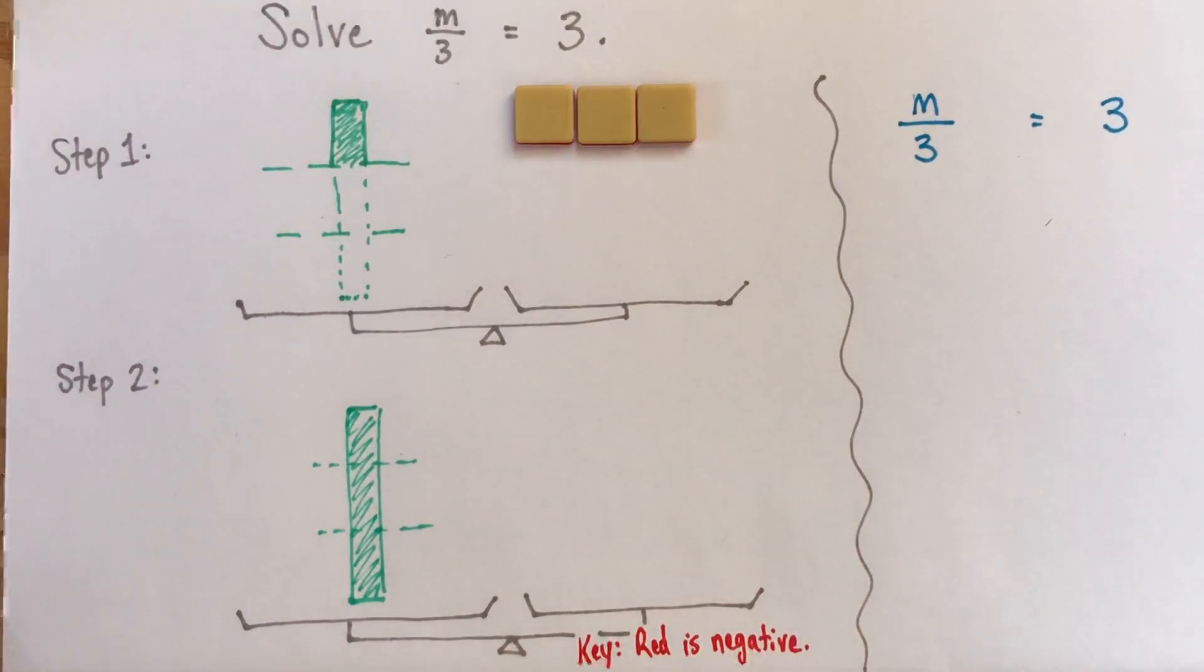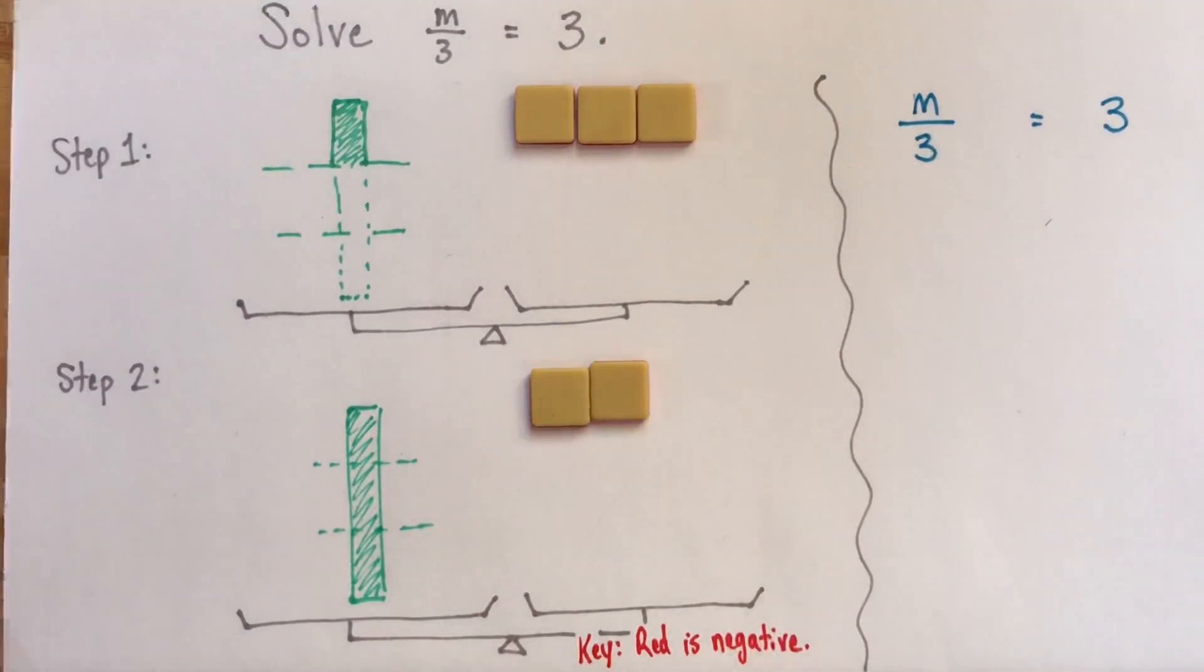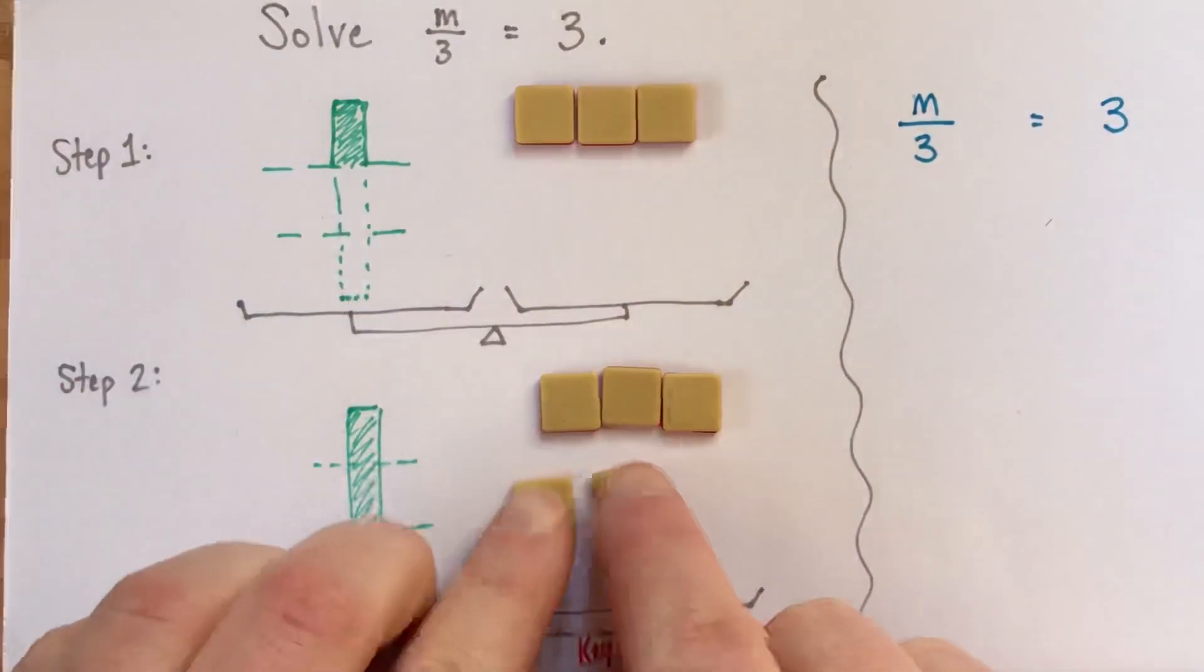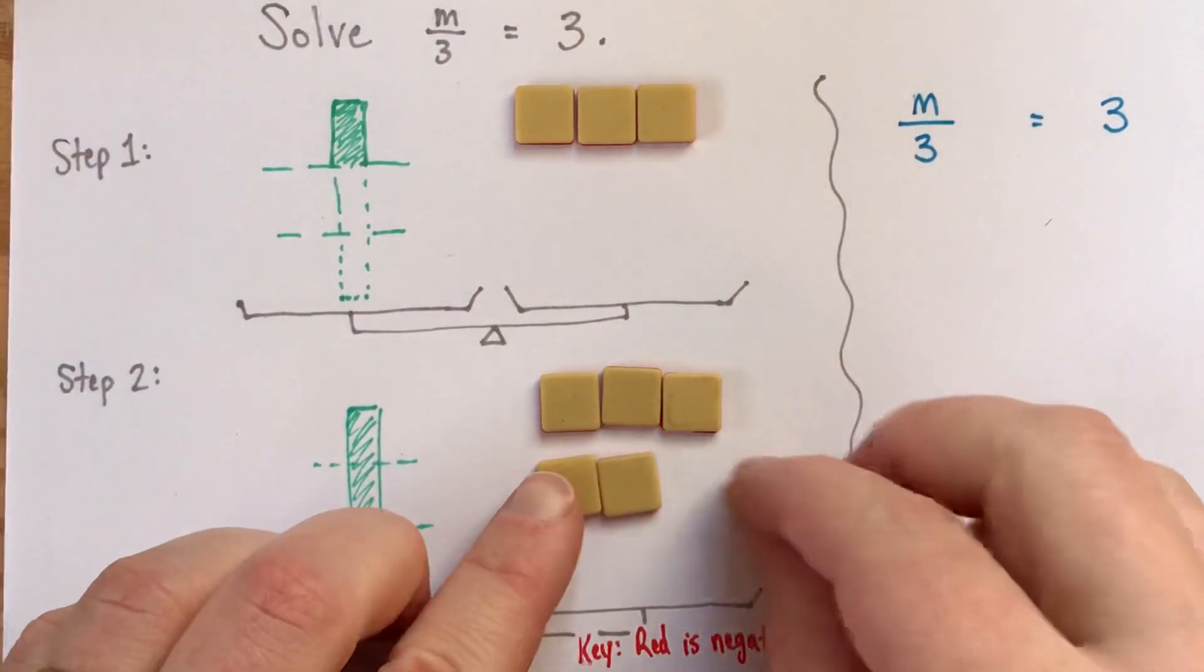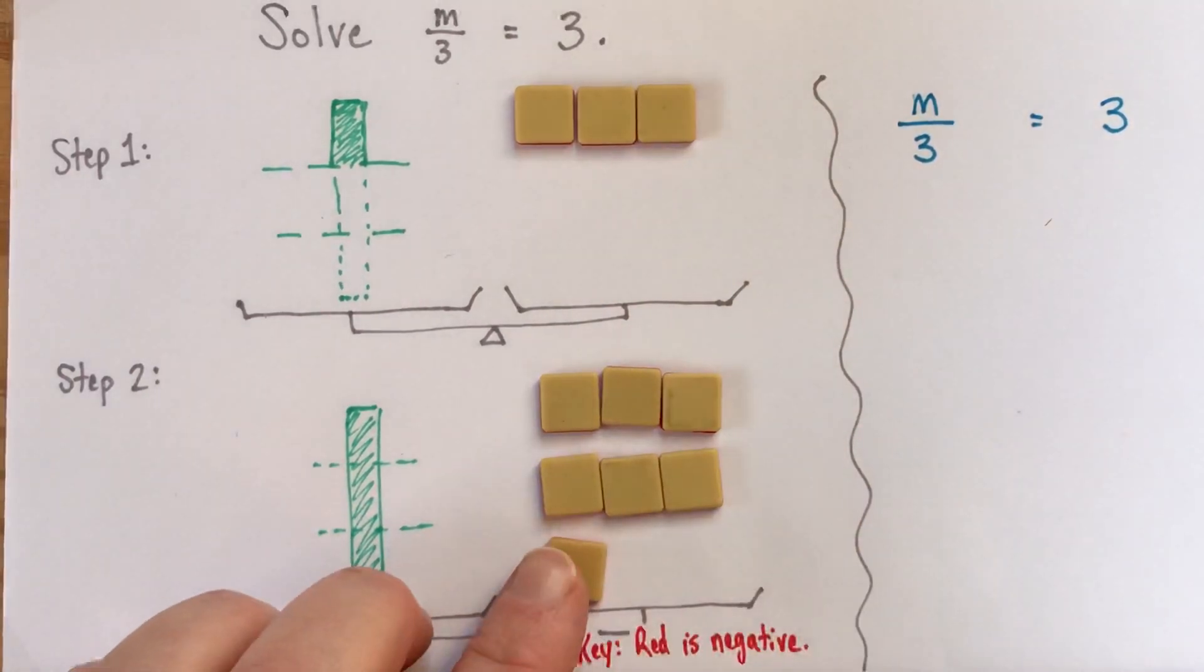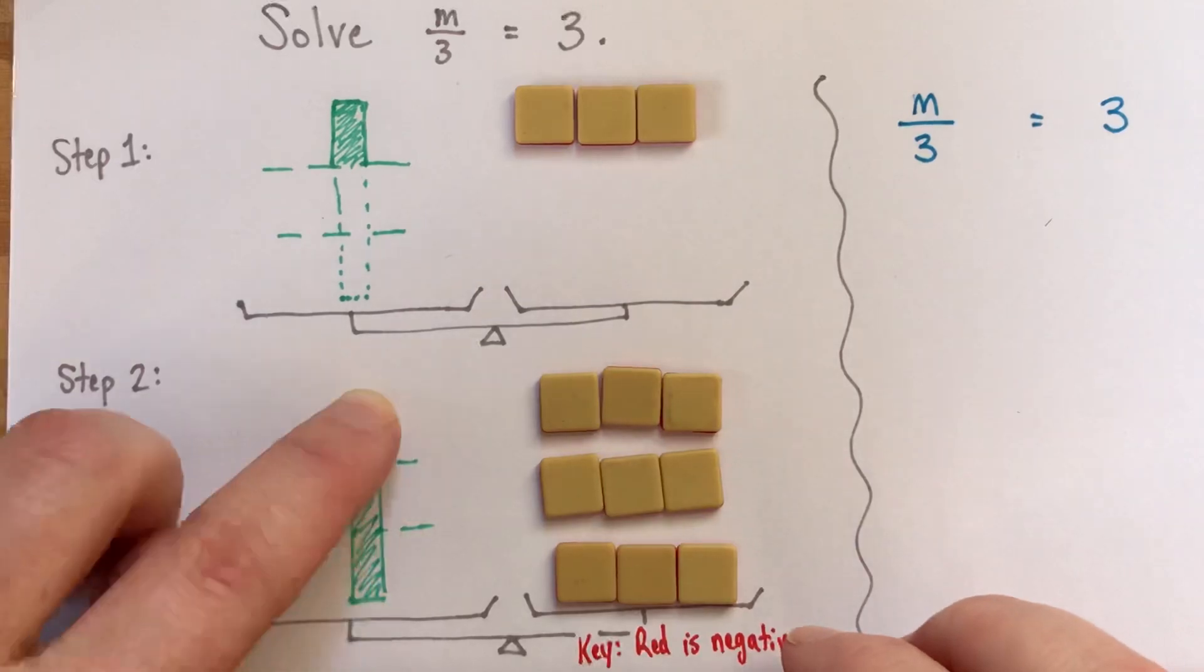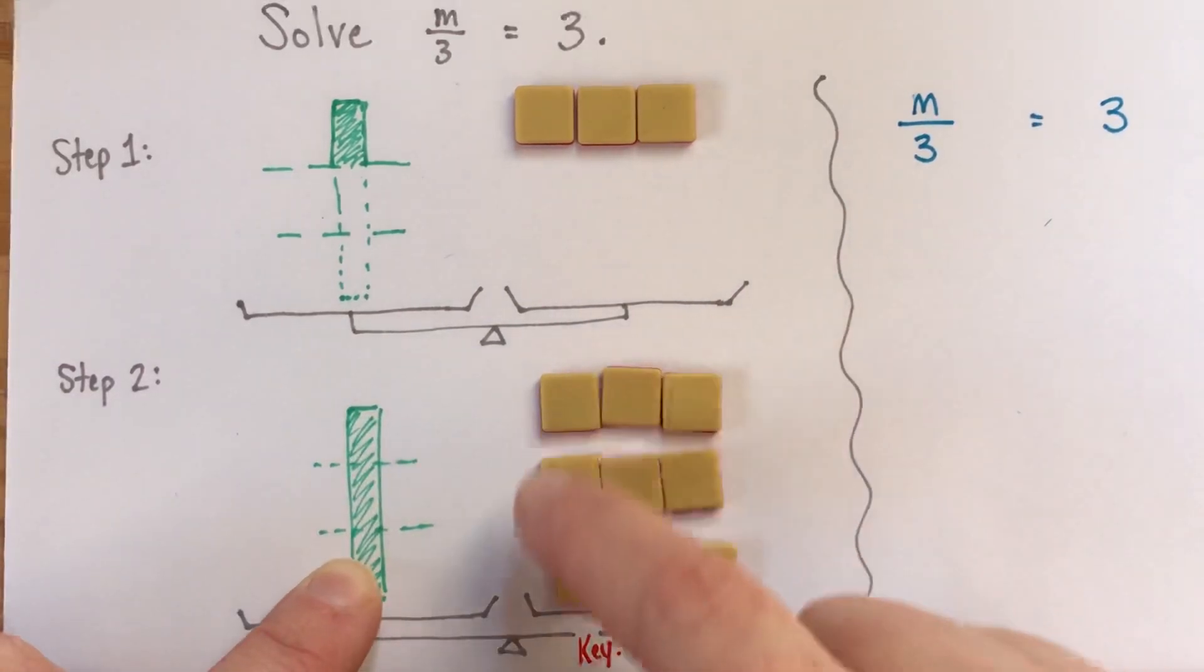And the reason I thought it might be helpful to draw in the thirds is because then we can line up each of those thirds is worth its own 3. There. So, m is what we have on the left, is equal to 9.